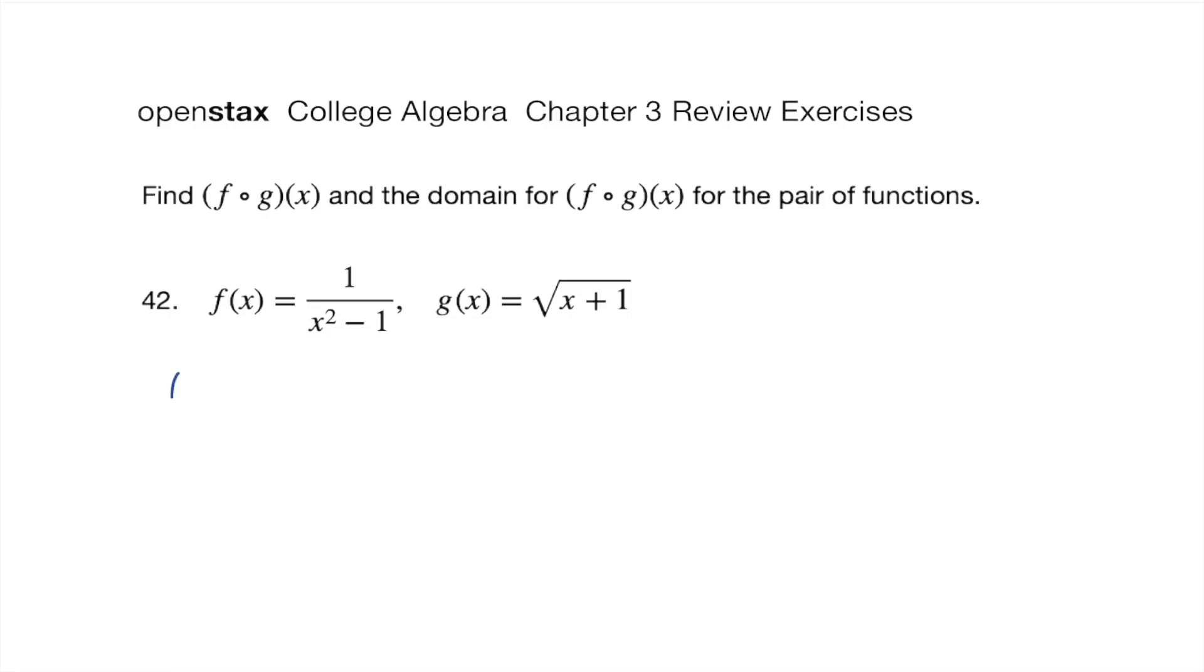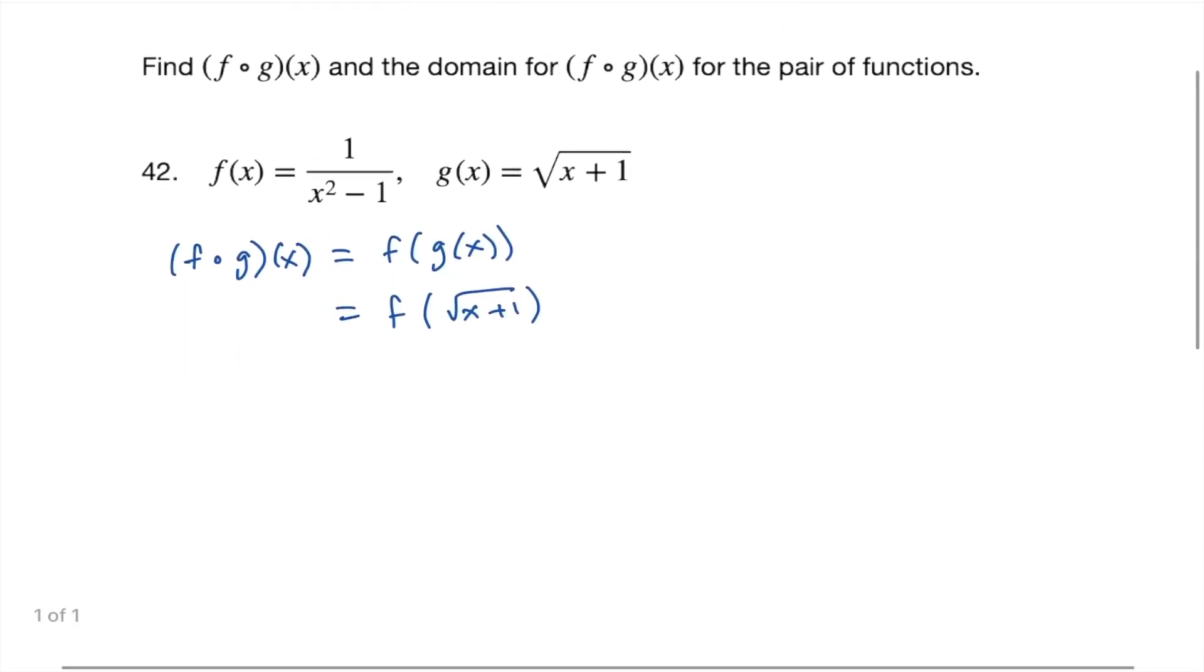So let's find f composed with g at x. This is f of g of x. f of - okay, so g of x is the square root of x plus one. So now wherever we see an x in the definition of f, we replace it with the square root of the quantity x plus one.